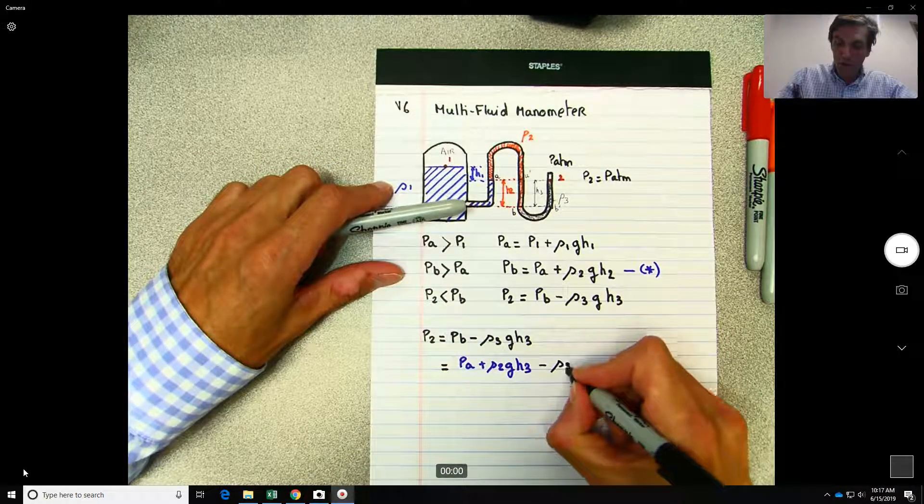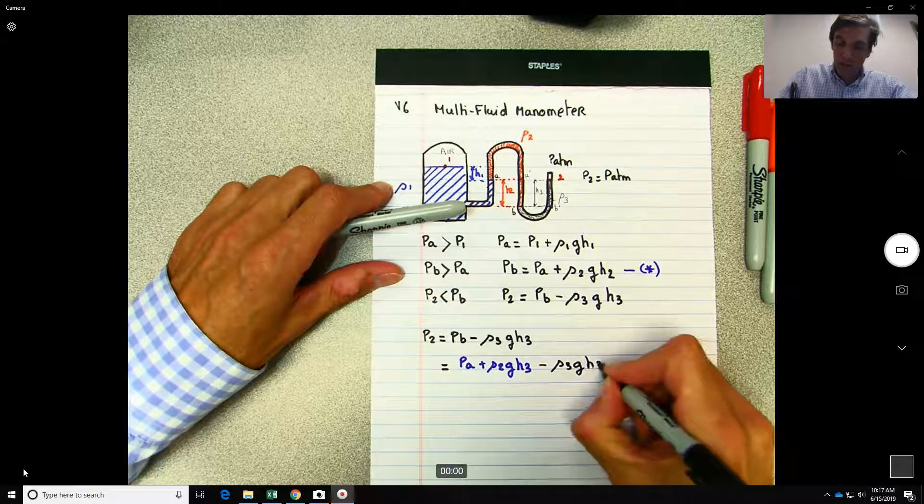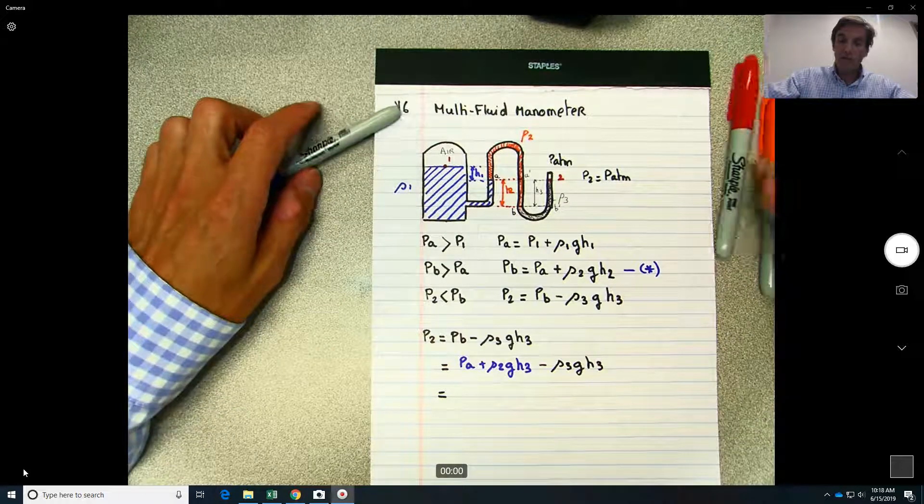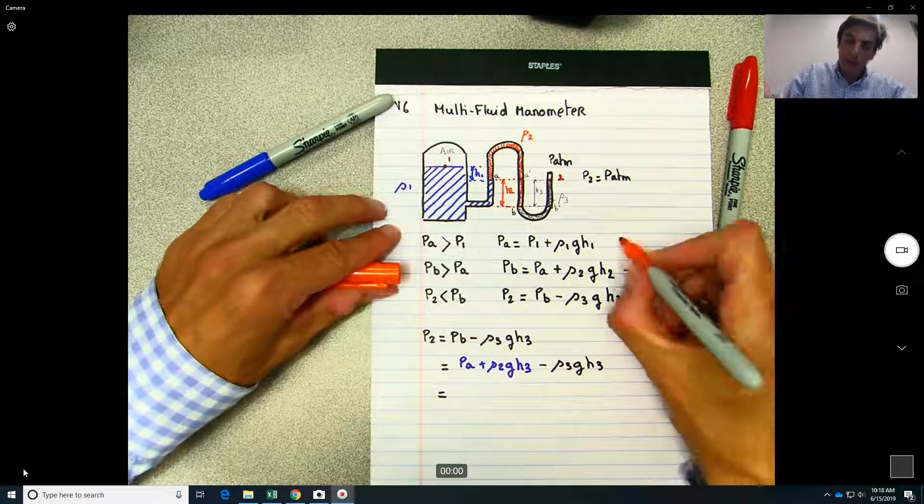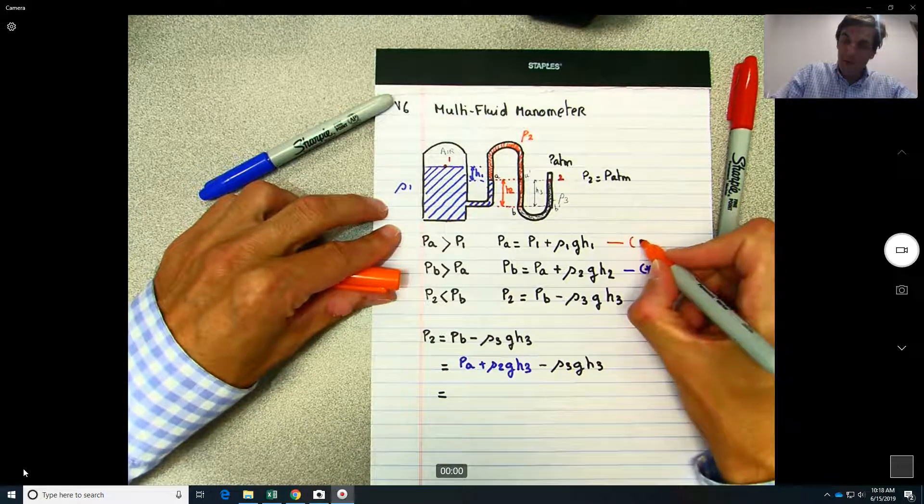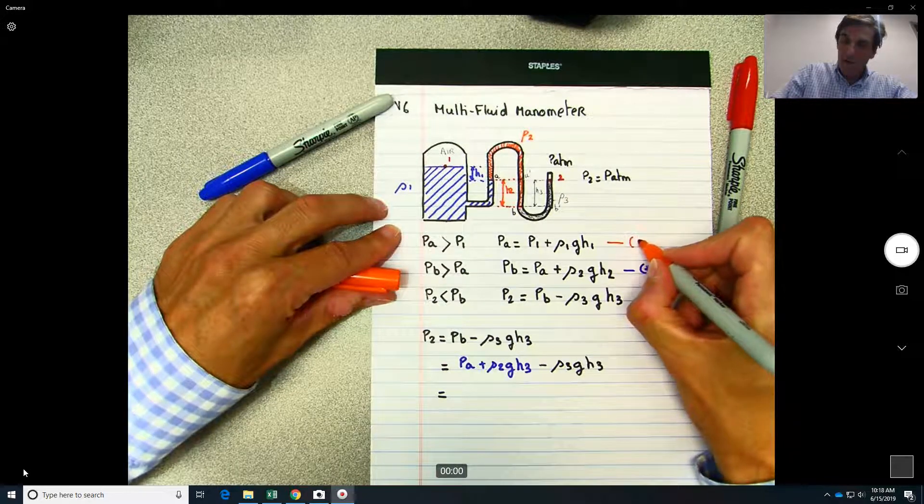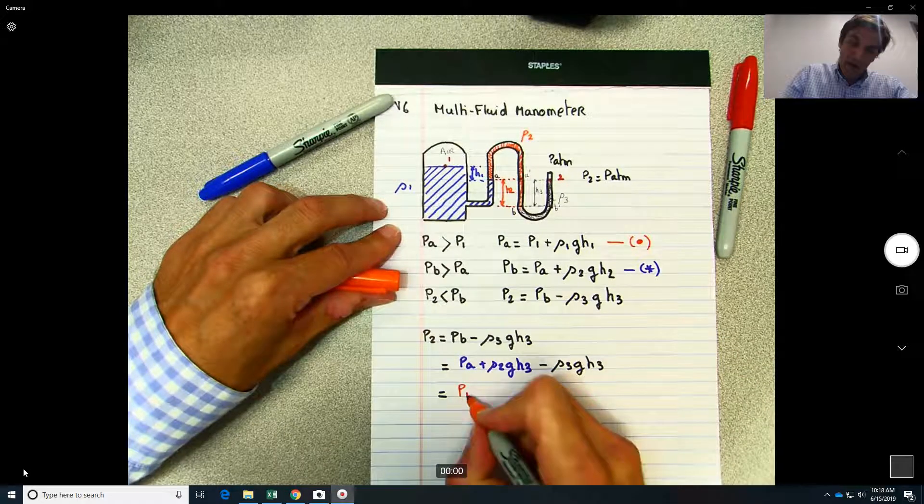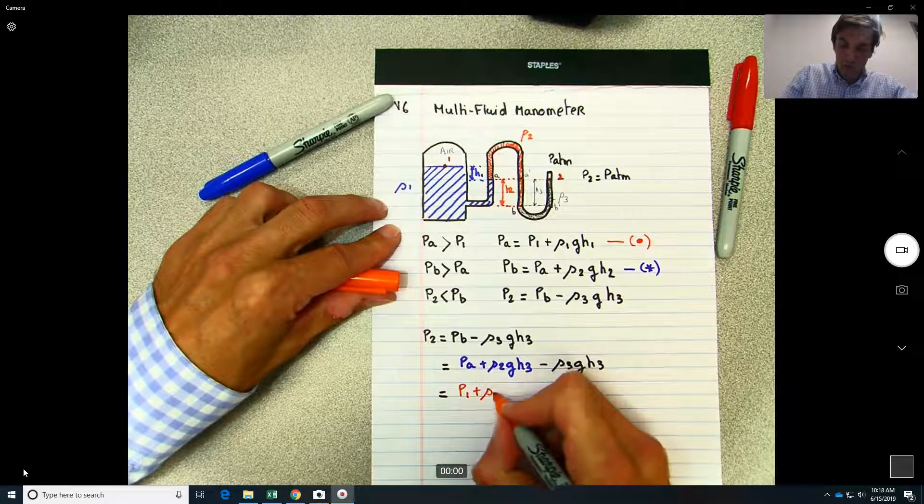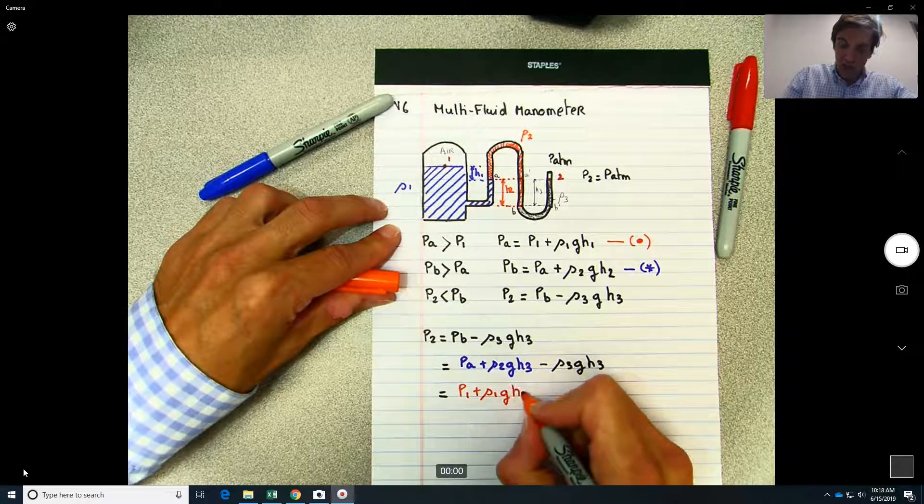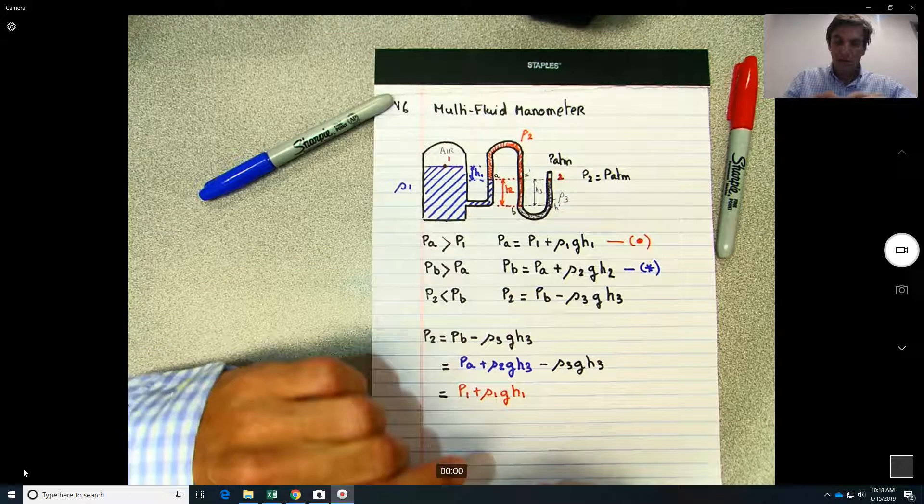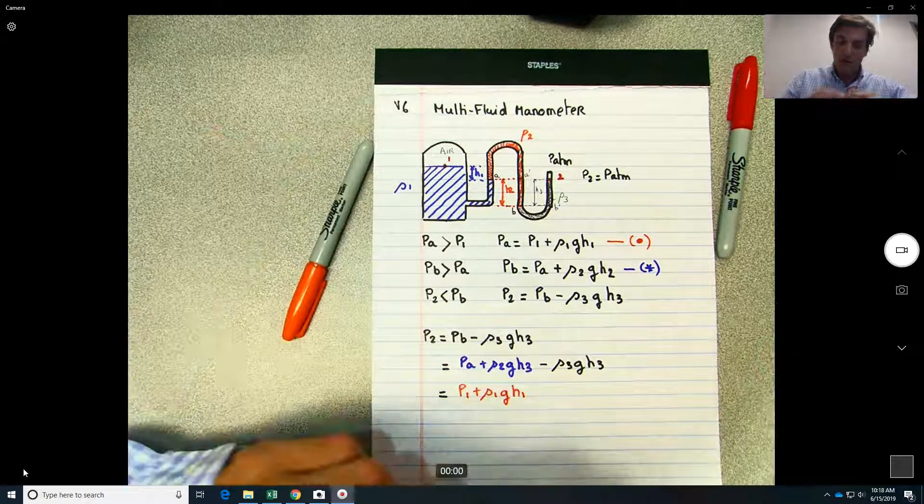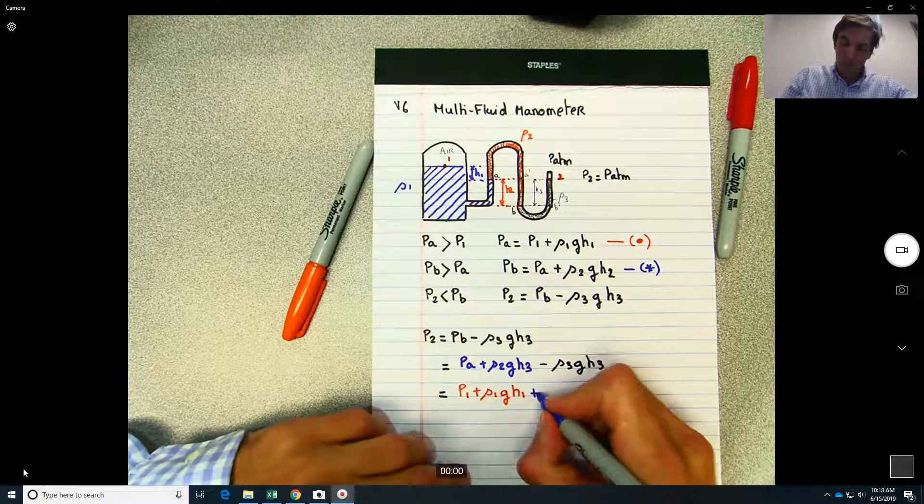But now if we use this equation here, what is PA? PA will be that expression here, which is equal to P1 plus rho 1 G h1.